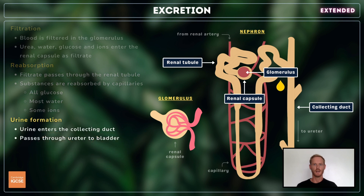What remains of the filtrate is called urine, which contains the excess water and ions, and urea, none of which was reabsorbed. The urine passes down the collecting duct and through the ureters to the bladder.